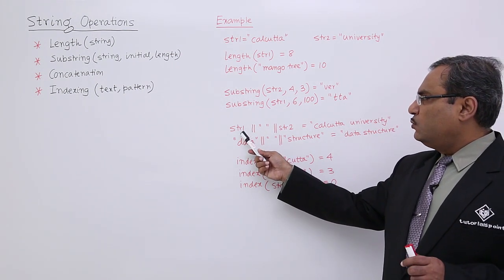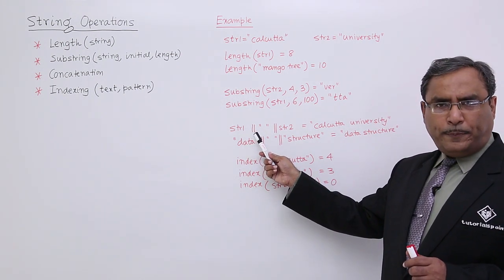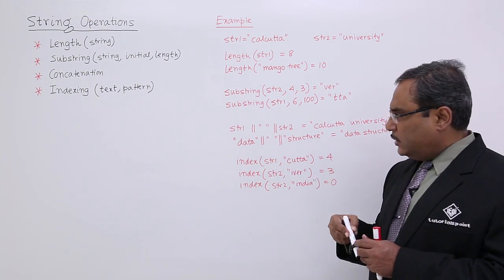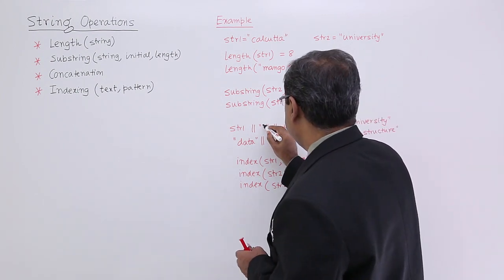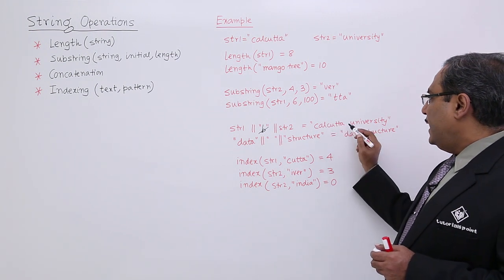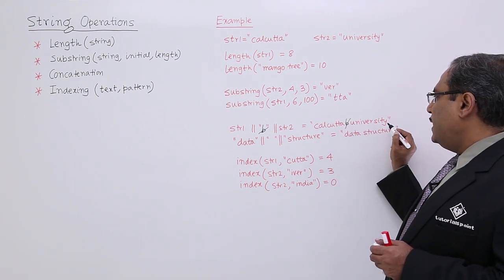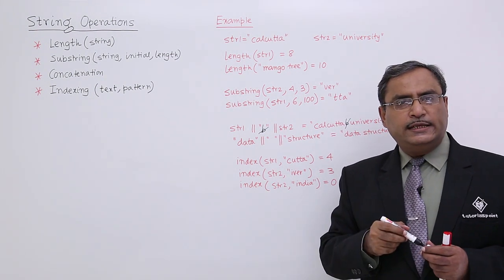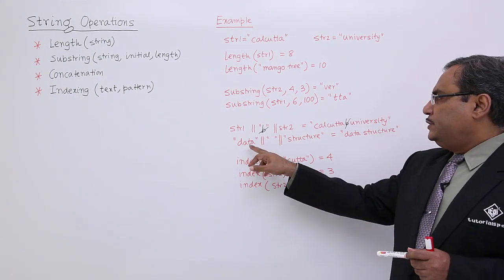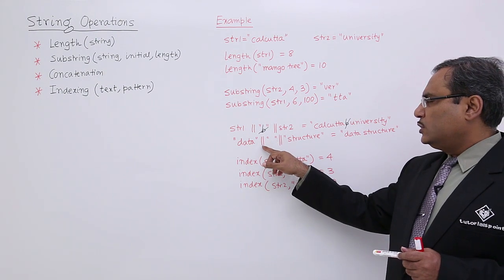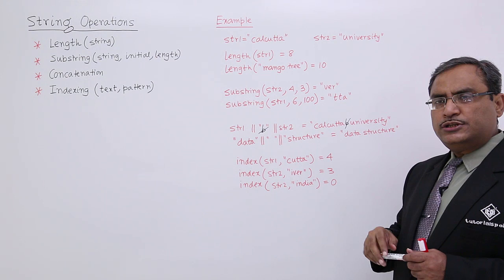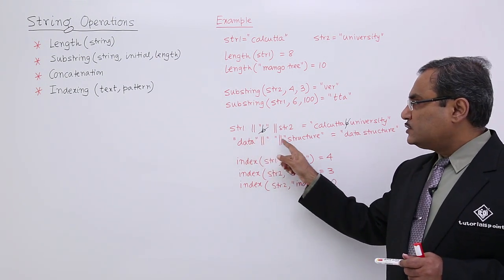You are having STR1, concatenation operator, one blank character enclosed within double quotes, and then STR2. We will be having Calcutta, one blank, and then university. In this way, the strings are getting concatenated. Data, one blank space, concatenation operator, concatenation operator, structure. So we will be getting data structure here. That is our string concatenation.